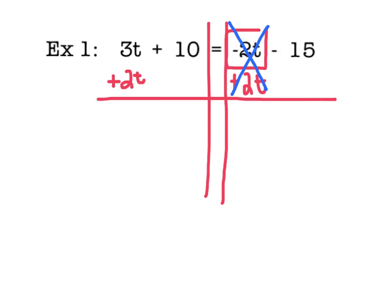My negative 2t plus 2t are my inverse operations that cancel each other out. On the left, when I combine the t's, I get 5t plus 10 is equal to, and notice that I have 15 left over here, but that 15 has a minus sign in front of it. That means that is going to be negative 15 left over on the right-hand side.